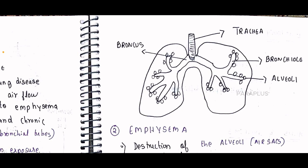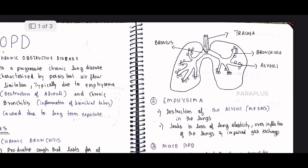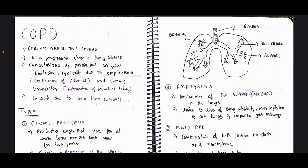The alveolus has elasticity, like a balloon. Normally the balloon stretches and recoils. If the balloon becomes too large and loses elasticity, it becomes a waste and its function is impaired. This is what happens in chronic bronchitis and emphysema.